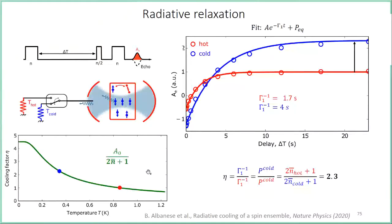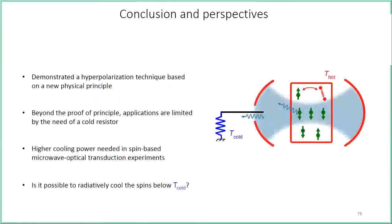Comparing this cooling factor with our 2n+1 law, we find that we are cooling the spins from 850 millikelvin to a temperature of about 350 millikelvin. We do not reach 20 millikelvin because we found about 2 dB of microwave losses between the cold thermal source and the cavity, meaning the cavity is still coupled to some hot microwave thermal radiation even in the cold case, limiting our efficiency. With this, I hope to have convinced you that we have demonstrated a new universal hyperpolarization technique — at least the proof of principle of this new technique based on a new physical principle.